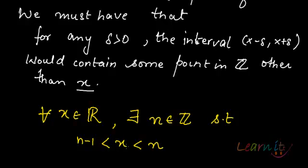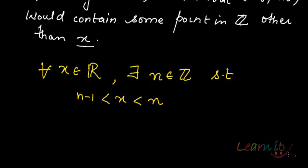That means between any two consecutive integers, there would be some real number. That is something we know from one of the properties of R.